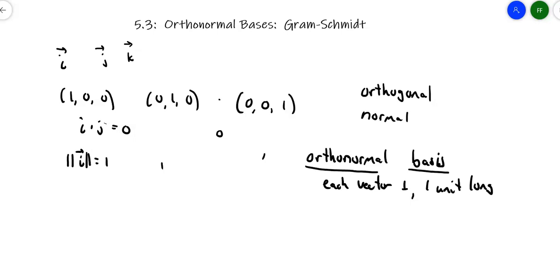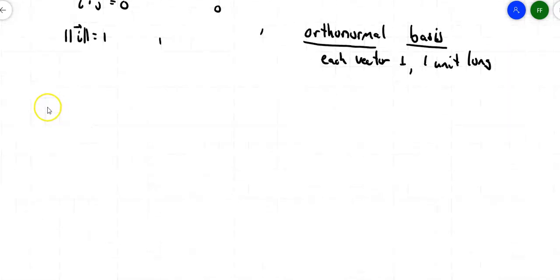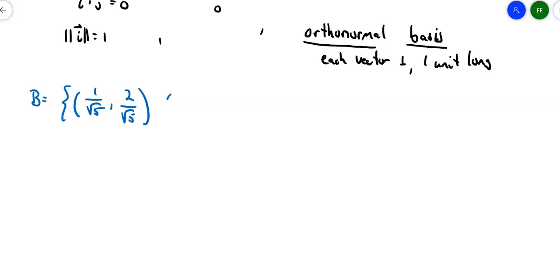Sometimes when a basis is an orthonormal basis, good things happen. We can use them in theorems, we can use them in applications. So it might be interesting to know when something is an orthonormal basis. So let's take a look at this basis. I've got (1/√5, 2/√5) as my first vector, and the second vector is (-2/√5, 1/√5). So is this an orthonormal basis?